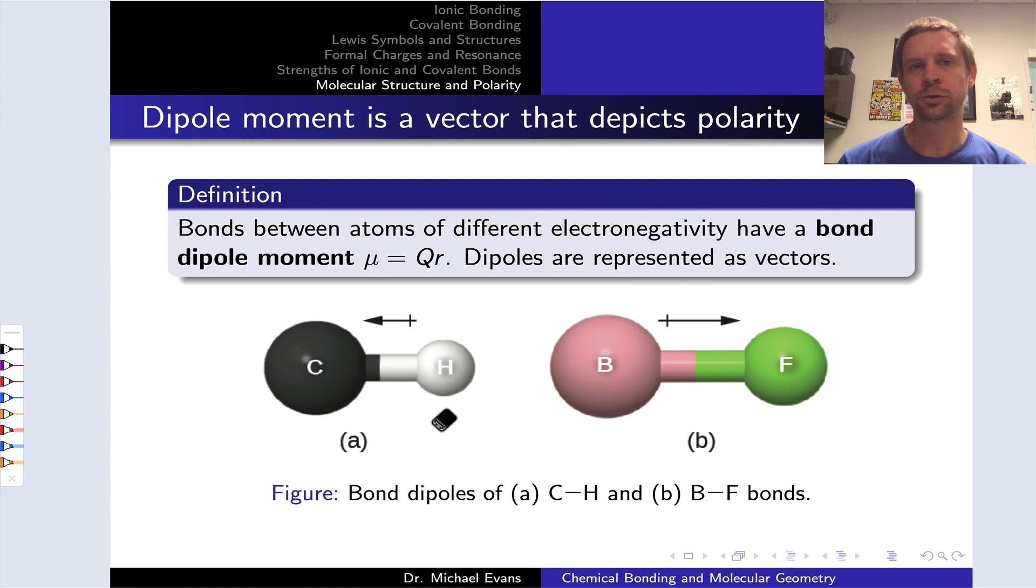One of the reasons we're concerned with the three-dimensional geometries of molecules is that it's an important indicator of whether the molecule's electron distribution as a whole is symmetric or not. And if the distribution of electrons is not symmetric, we're looking at a polar molecule potentially.